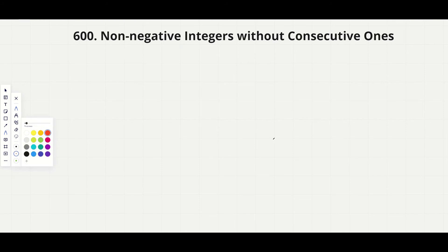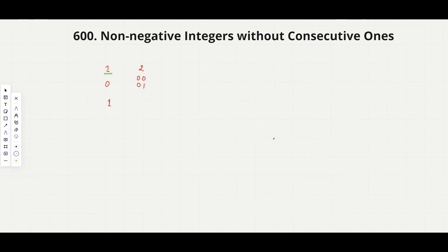Let's look at this problem in a bit more detail. If you have only one bit, how many numbers can you make? You can make 0 or 1 — those are the binary representations. If I have 2 bits, from 0 we can make 00 and 01, and from 1 we can make 10 and then 11.